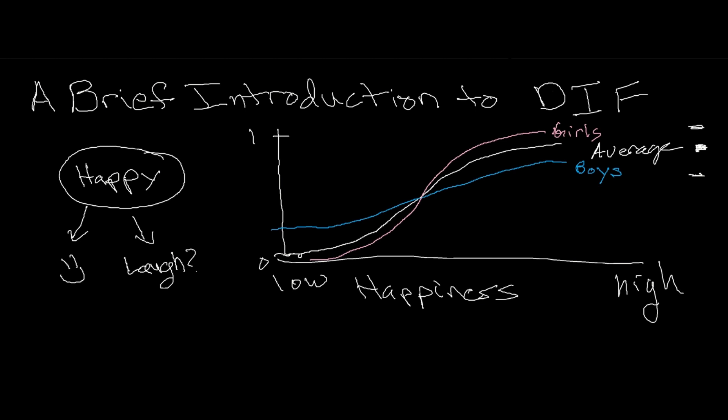we see a slightly different trend. And so that's what differential item functioning is: girls respond in one pattern and are likely to say that they're smiling conditional on their level of happiness, but boys, on average, tend to respond differently. And that's really the foundation of differential item functioning,